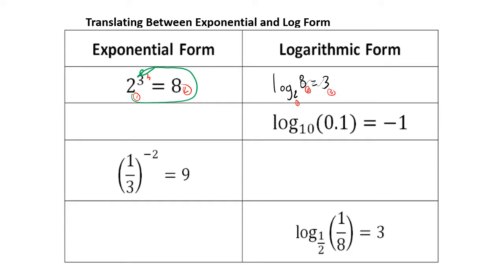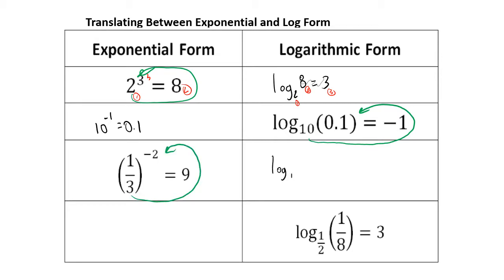We can do it for this one too — it's the same thing. We start at the base, go in the direction of the equal sign. We have 10 to the negative first power equals 0.1 — and that's correct because 10 to the negative first is the same as 1 over 10, which is 0.1. For the next one: 1/3 raised to the negative 2 gives us log base 1/3 of 9 equals negative 2. What power do I raise 1/3 to in order to get 9? I raise it to the negative 2nd power.